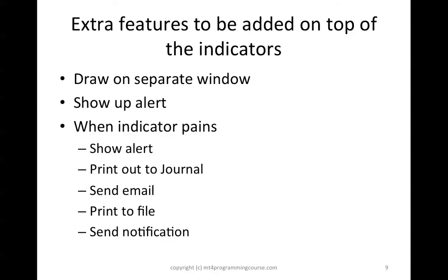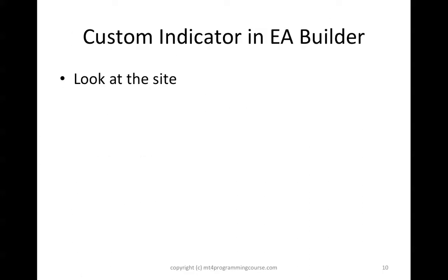And the rest of the extra features — such as you can draw the indicator in a separate window. For indicators like RSI or MACD, they are shown in a separate window, and this EA Builder supports this feature. And there are a lot of additional features such as show alert when the indicator is triggered, print to journal, send to email, print to file, and send notification. So let me bring you through and have a look at a site tour of what this eabuilder.com looks like.